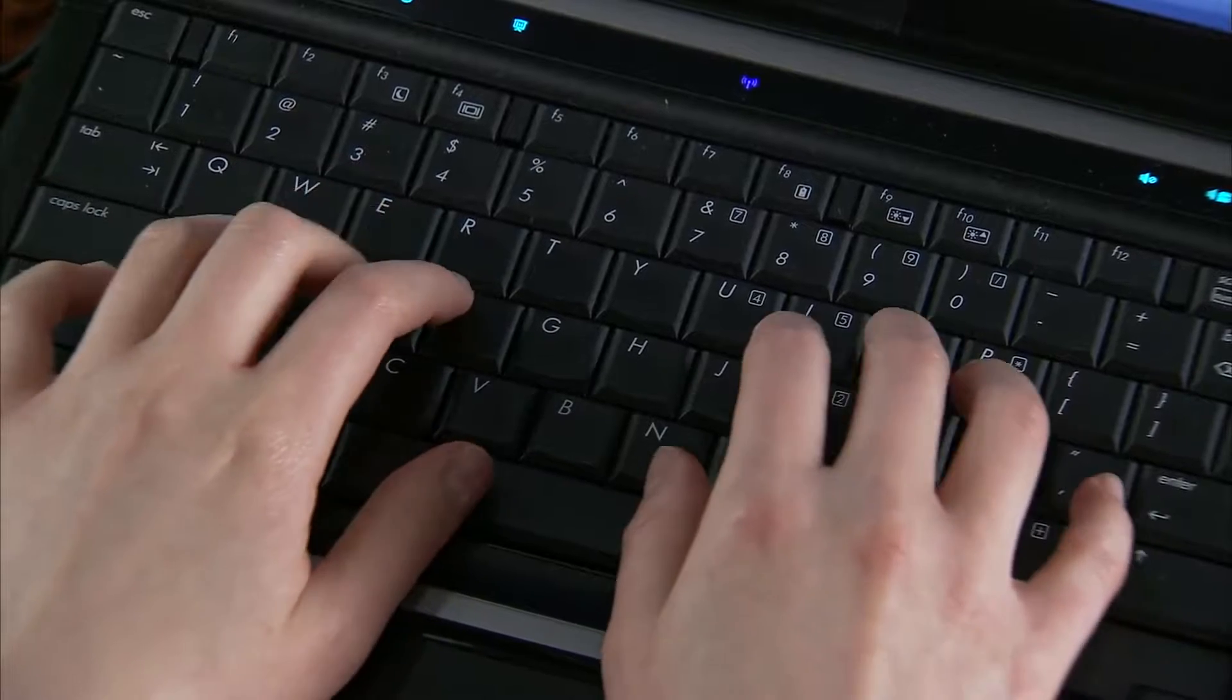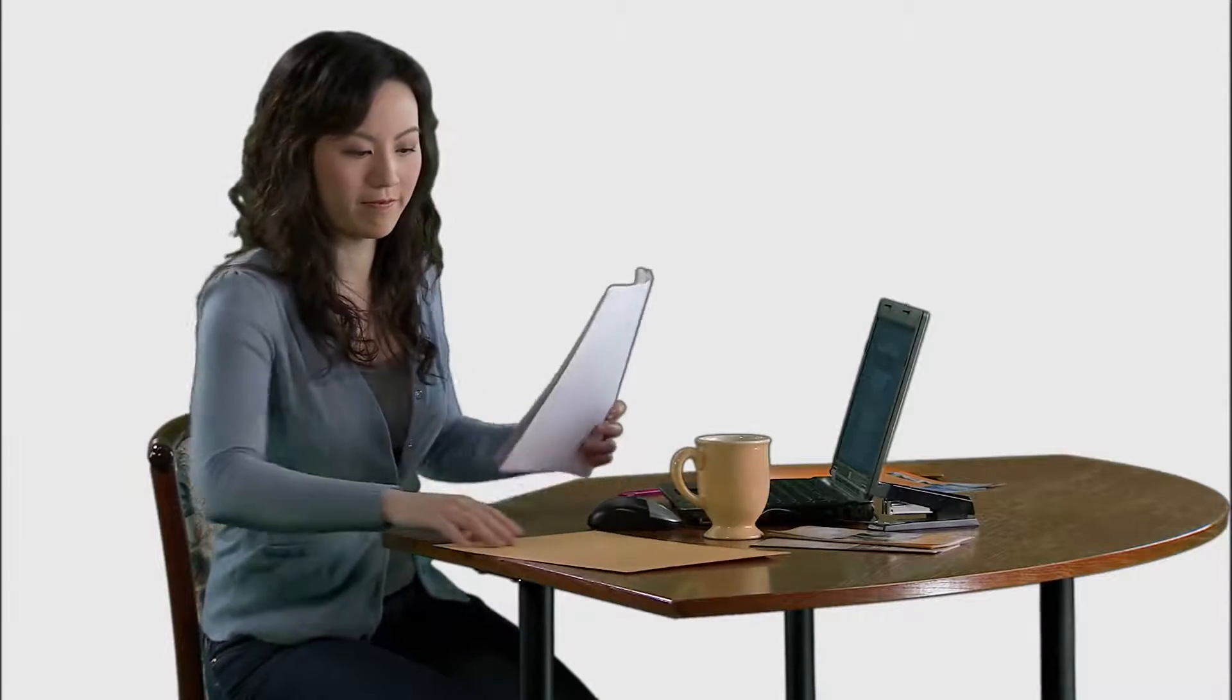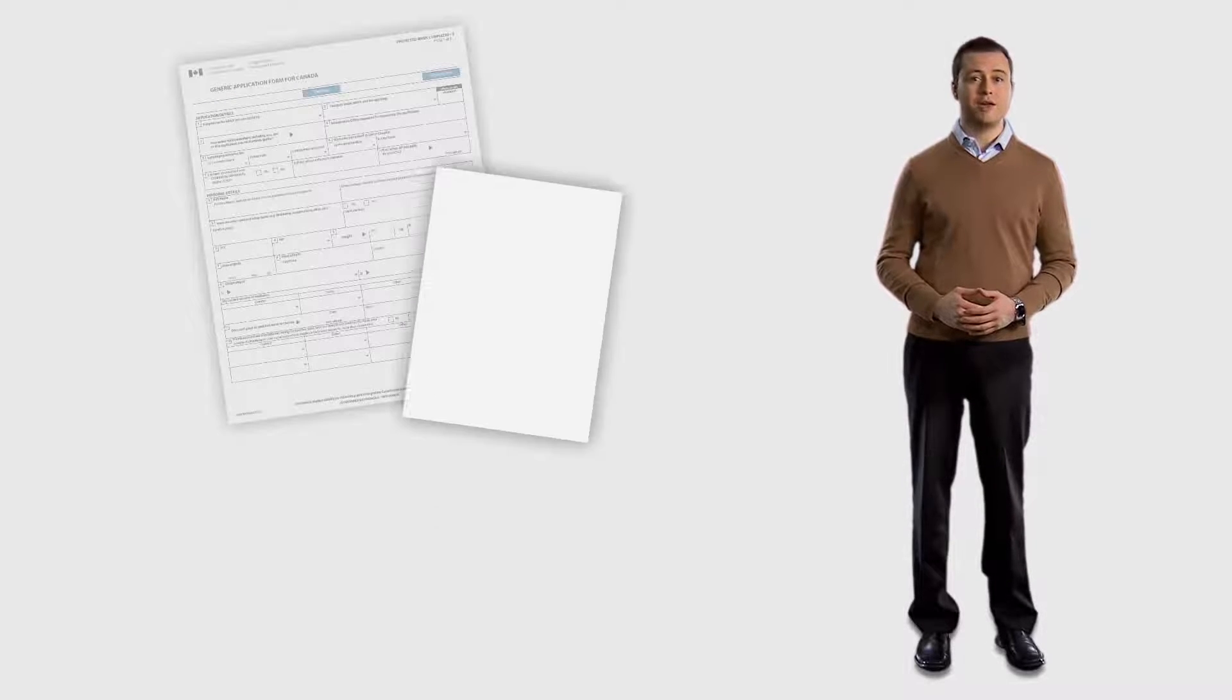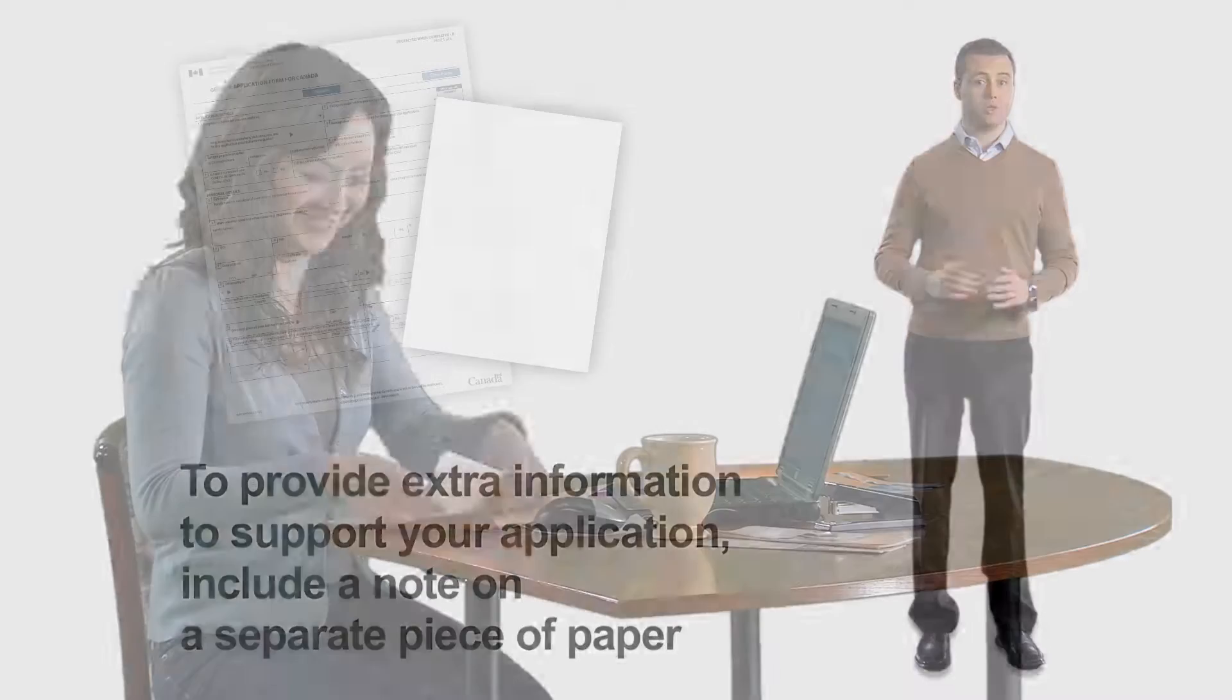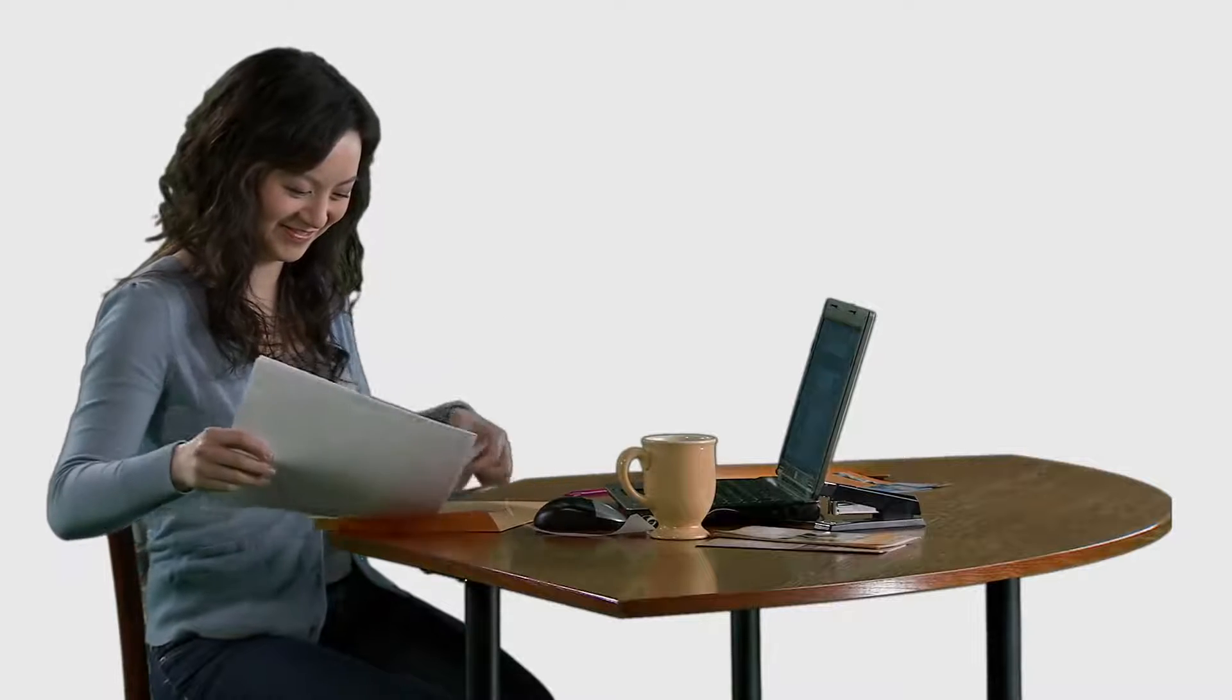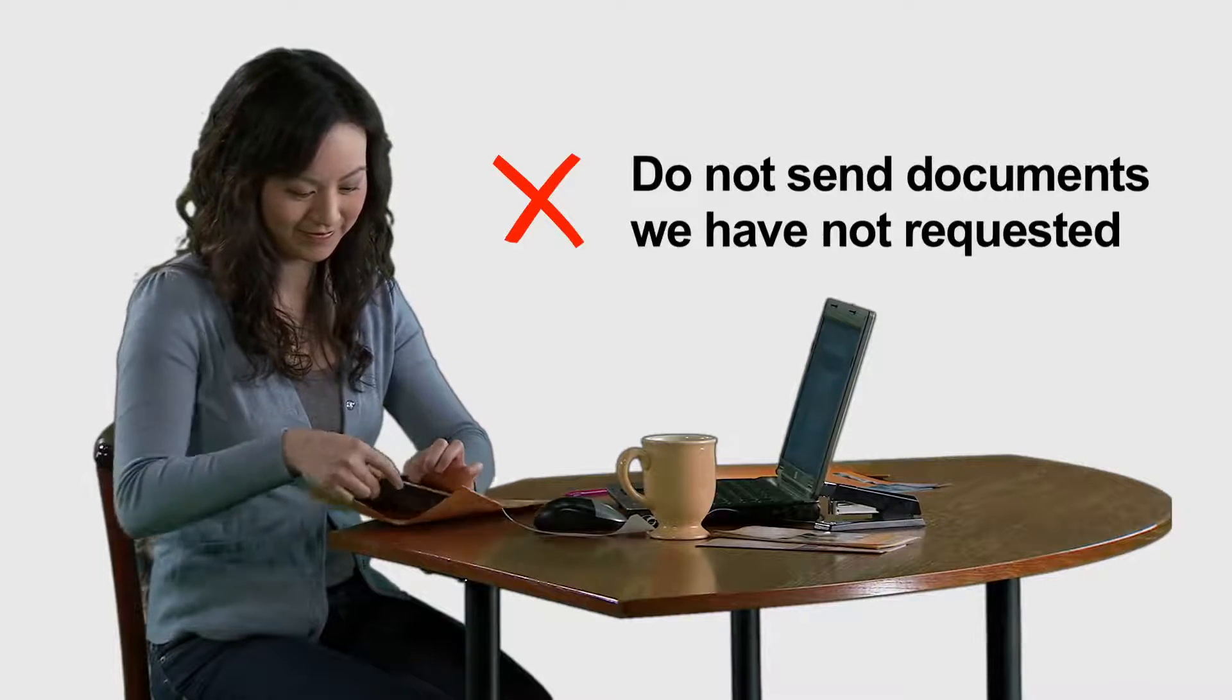Your application will be returned to you if there are problems or if you are missing information or documents. You will be asked to fix the problems or obtain the correct documents, then resubmit your application to us. This takes time and causes delays. If you need to provide extra information to support your application, you may include a note with your application package. The note should be provided on a separate piece of paper and should include additional details you want to give to CIC. However, do not provide documents that we have not requested.